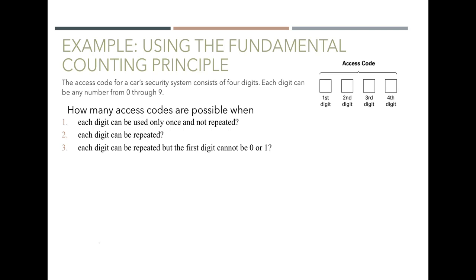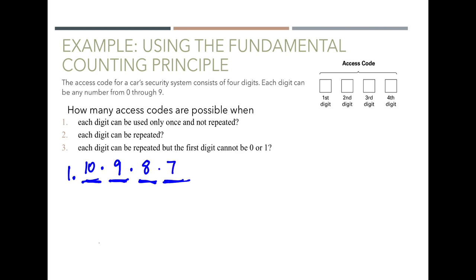Let's look at access codes. The codes for a car security system consist of four digits, each from zero to nine. How many codes are possible when each digit can only be used once? For the first spot there are 10 possible digits, then 9, then 8, then 7 — since we cannot repeat. Multiplying these out: 10 times 9 times 8 times 7 gives us 5,040 different possible codes.